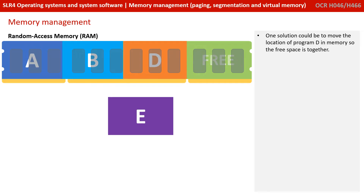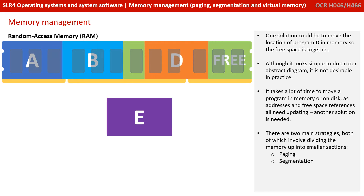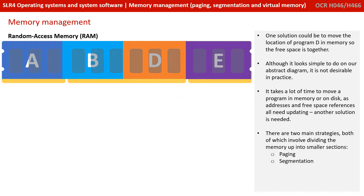One solution could be to move the location of program D in memory so the free space is all together. Although this looks really simple to do with our abstract diagram here, it's not actually very desirable in practice. It takes a lot of time to move a program in memory or on disk, and all the addresses and free space references need updating. We actually need another solution.